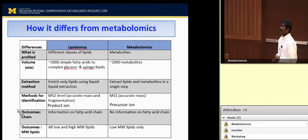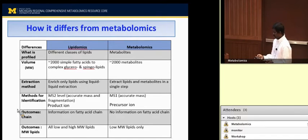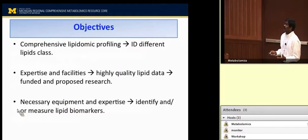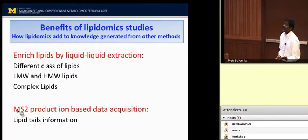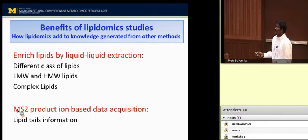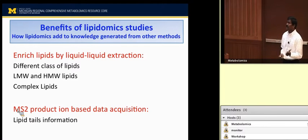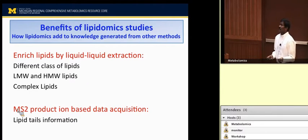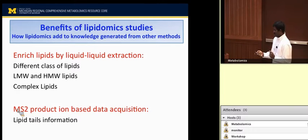Lipidomics allows us to profile all low and high molecular weight lipids, whereas in metabolomics we can profile only low molecular weight lipids. By enriching only lipids through liquid-liquid extraction, we can profile all different classes of lipids like free fatty acids, glycerolipids, glycerophospholipids, sphingolipids, and sterols — including low molecular weight lipids such as glycerophospholipids with only one fatty acid chain and monoglycerides, and high molecular weight lipids like cholesterol esters and triglycerides, and complex lipids like sphingolipids. MS2 product ion-based data acquisition in lipidomics helps to identify lipid tail information in complex lipids.